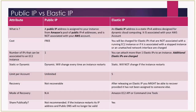First, what is a public IP address? A public IP address is assigned to your instance from Amazon's pool of public IPv4 addresses, and this IP address is not associated with your AWS account. Essentially, when you launch an EC2 instance and you enable auto-assign public IP, the IP address associated with your EC2 instance is a public IP address.